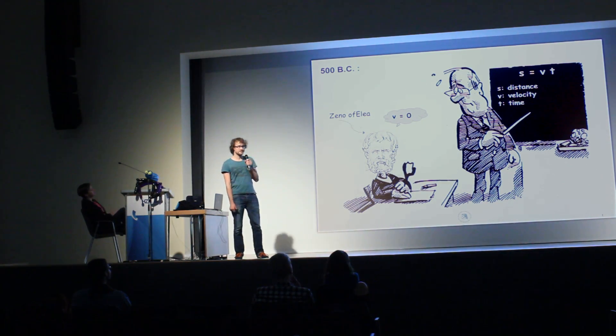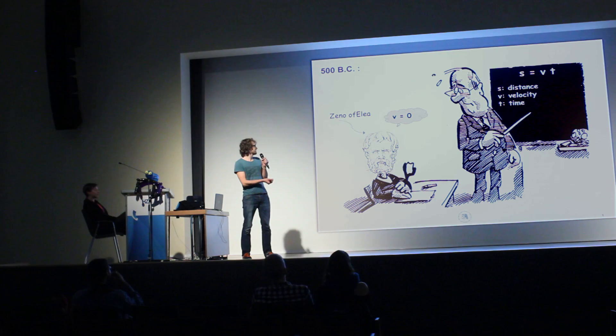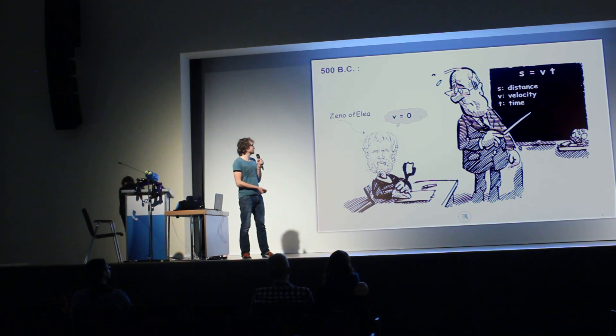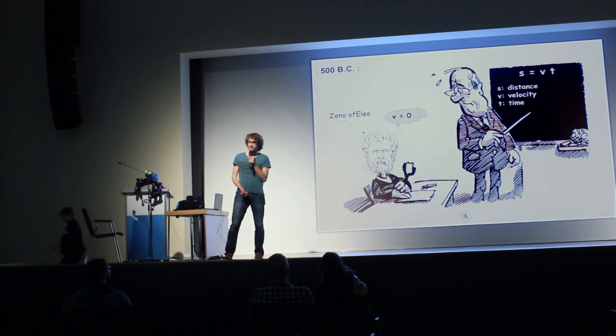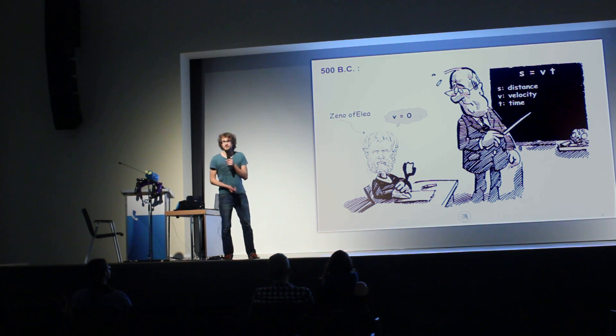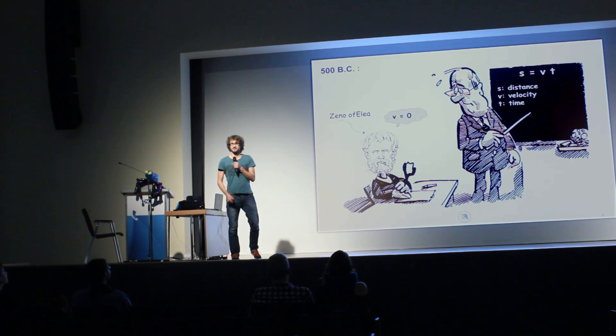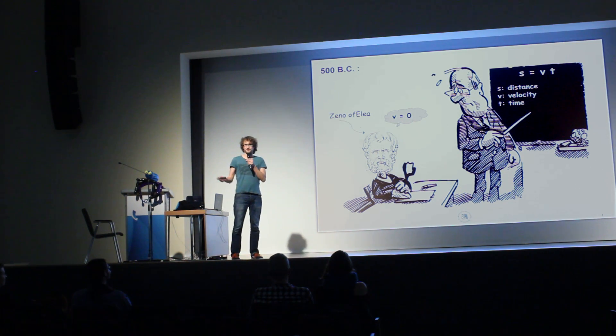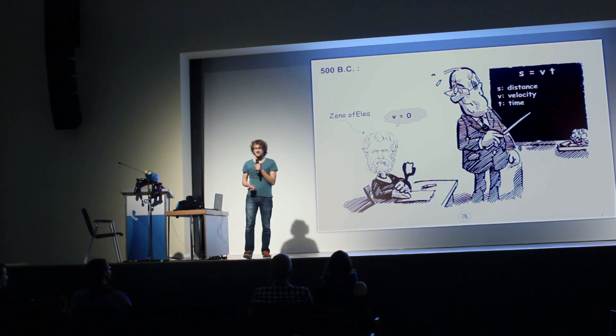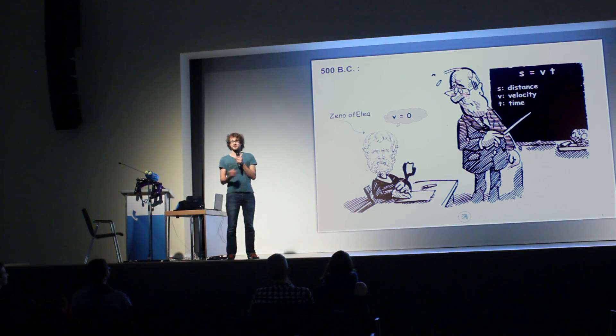When Zeno went to school, the teacher was giving him some lessons on physics: s equals v times t, so distance is velocity times time. Zeno, of course, he wanted to check this if it's really true, so he took his slingshot and tried to shoot a little stone onto his teacher. But the teacher suddenly turned around and saw him. So Zeno, for sure, he stopped. He didn't want to shoot the teacher while he was watching, so there also the simple observation of Zeno stopped his motion.